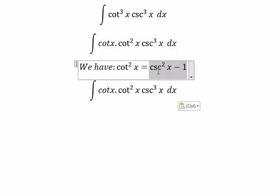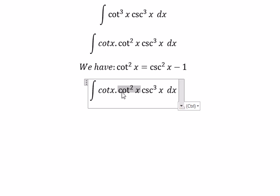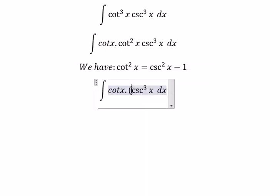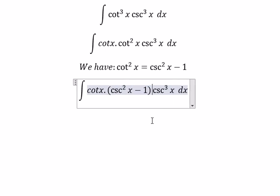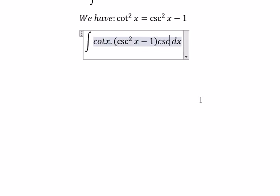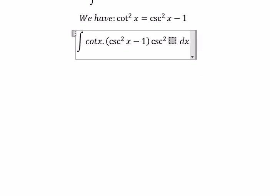So we put this one in here. Next, we put cosecant of x to the power of 3 into cosecant of x squared and we put cosecant of x in here.